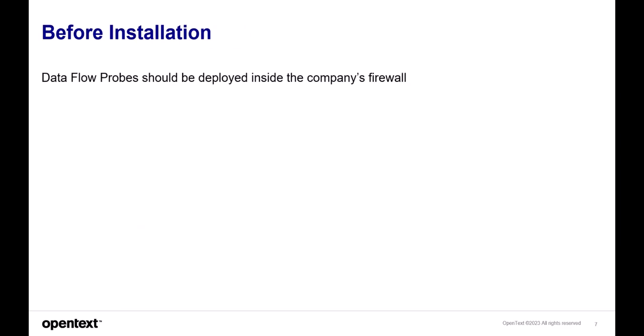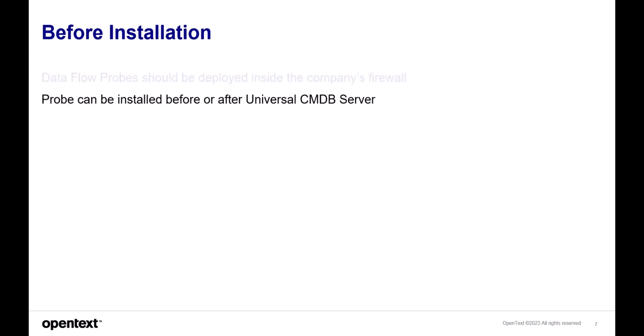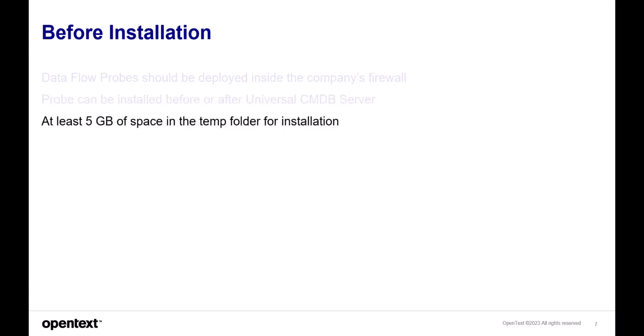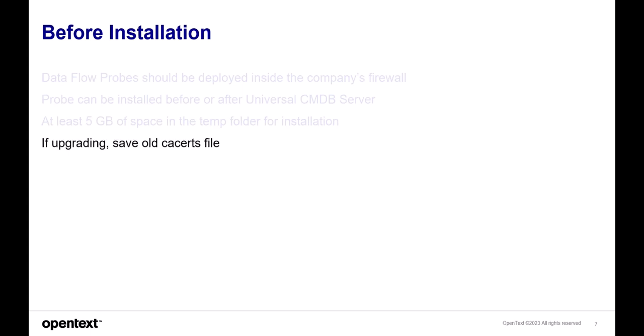Before installing a Dataflow Probe, it should be noted that Dataflow Probes should be deployed inside the company firewall. The probe can be installed before or after the Universal CMDB Server; however, the Dataflow Probe during installation will request the UCMDB application server hostname or IP address and will attempt to connect to it — so the UCMDB Server typically is installed first. The Dataflow Probe will need at least five gigabytes of space in a temp folder. If upgrading, save the old CA certs file and any other configuration files that may have been modified.